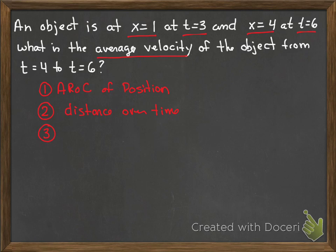Average velocity would be meters per second or feet per second, or some kind of units of distance divided by time.